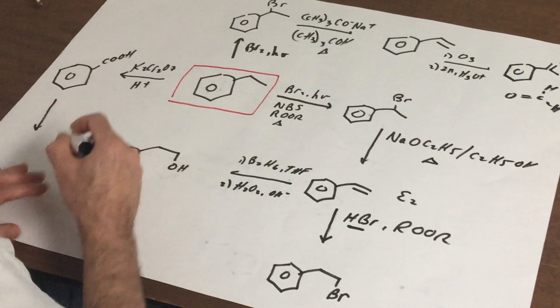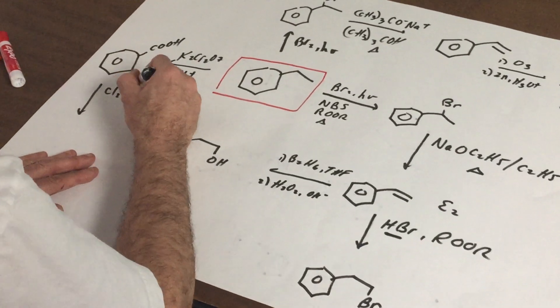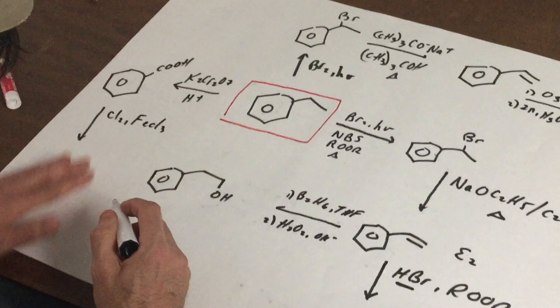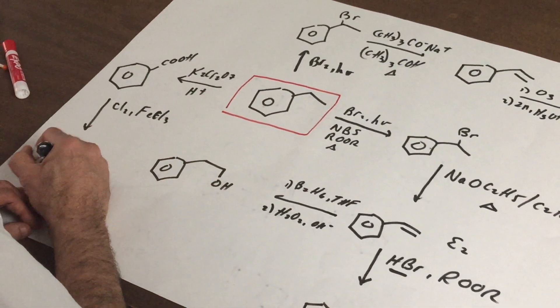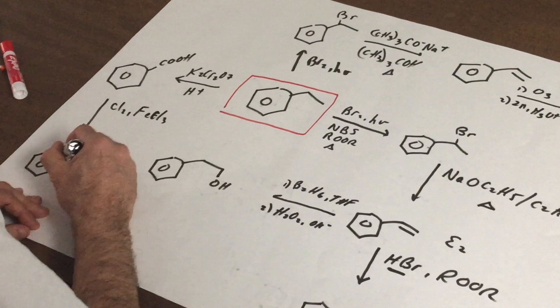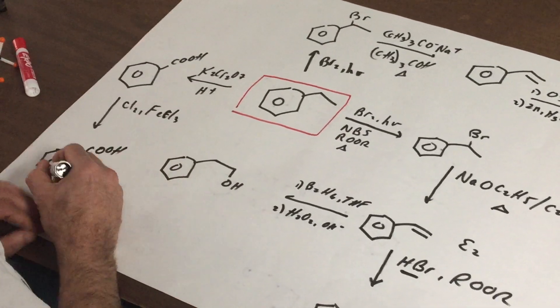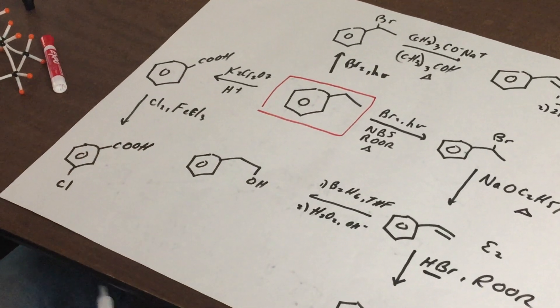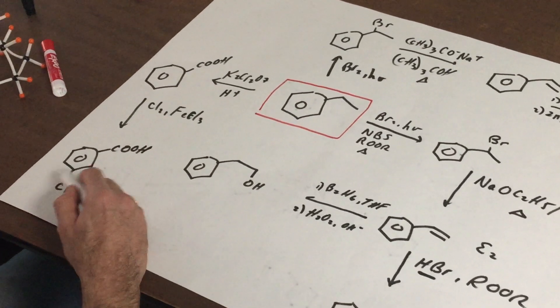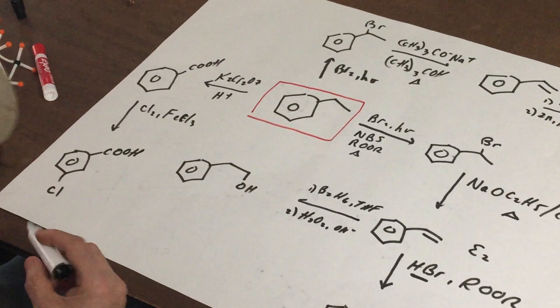Now that I got benzoic acid, what I can do is add, say, chlorine in FeCl3, which is a Lewis acid catalyst. And what that'll do is the COOH group does the directing. And it'll add the chlorine to the meta position, and that would be the 3-chlorobenzoic acid.